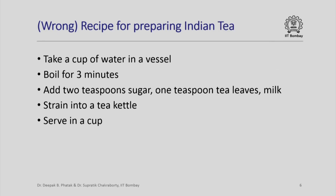Consider now the same recipe for preparing Indian tea where the steps are exchanged. Look at these steps: take a cup of water in a vessel, boil for 3 minutes, add 2 teaspoons sugar, 1 teaspoon tea leaves, milk, strain into a tea kettle and serve in a cup. Note that the steps are the same as the previous recipe shown in the last slide. The question is: will I get the right kind of Indian tea?